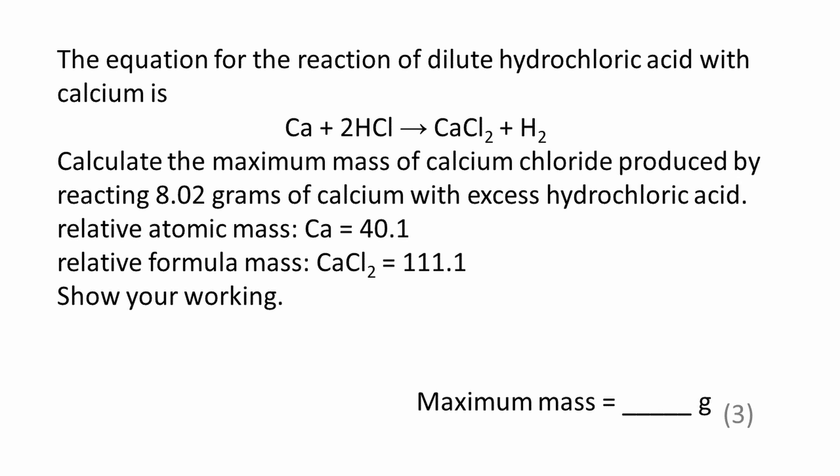Here's the question. The equation for the reaction of dilute hydrochloric acid with calcium is shown: Ca + 2HCl → CaCl₂ + H₂. Calculate the maximum mass of calcium chloride produced by reacting 8.02 grams of calcium with excess hydrochloric acid. We're given the relative atomic mass of calcium and the relative formula mass of calcium chloride. Show your working.